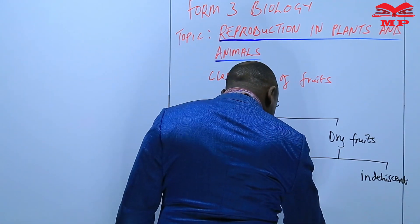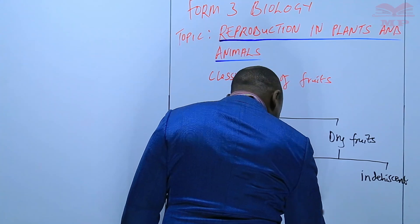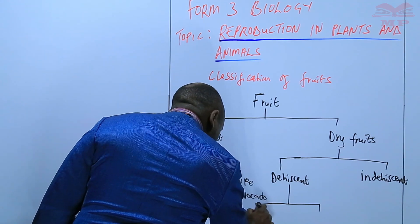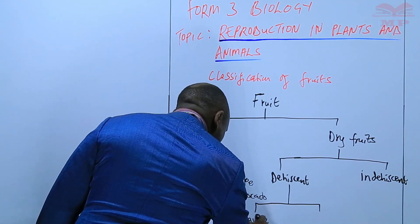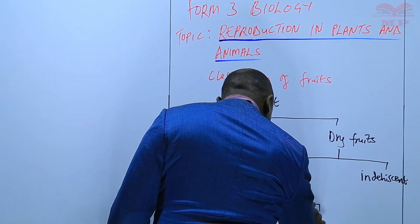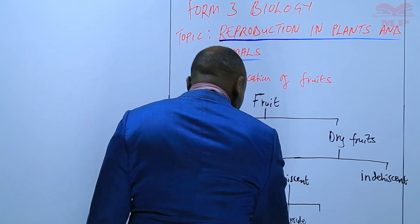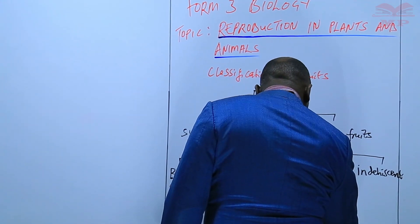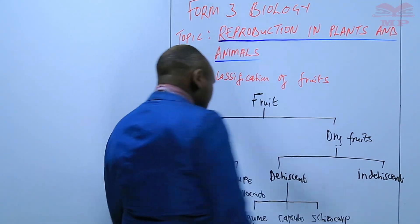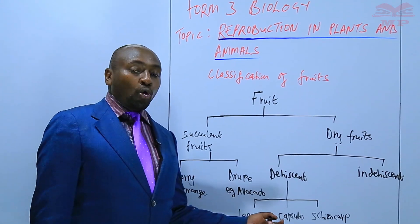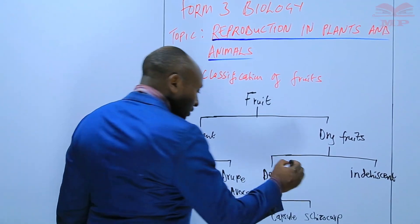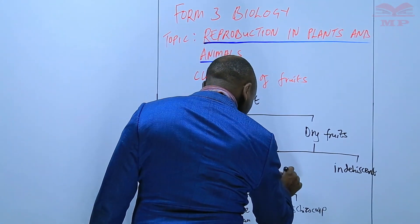The dehiscent ones we further divide into three parts. We have the legume — for example, something like a bean. And then we have the capsule. And then we have what we call the schizocarp. Those three are examples of fruits that split open when they mature — that is what is called dehiscence.